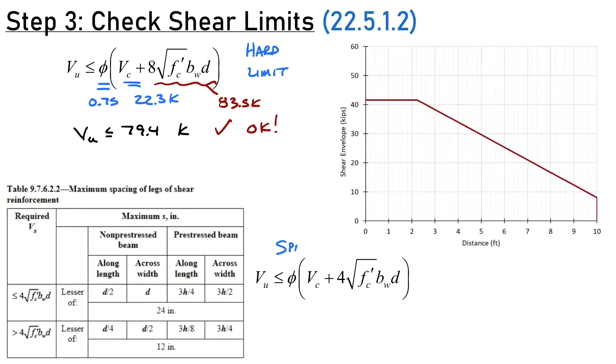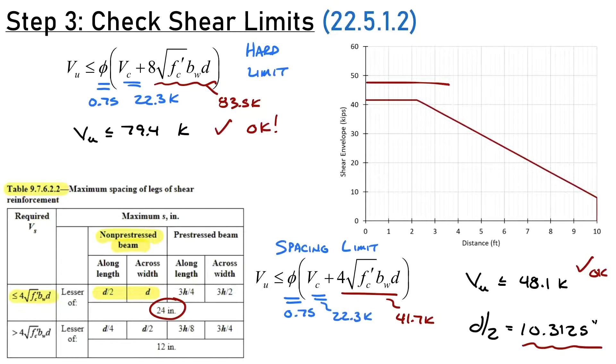The second limit is the spacing limit, which determines my maximum spacing of stirrups. Checking: is VU less than or equal to 48.1 kips? Yes, that limit is right about here and all my demands are less than that. That number gets used in table 9.7.6.2.2. Our required VS is less than 4 root F'C BWD. For a non-prestressed beam, my spacing limits are D over 2 along the length and D across the width, or 24 inches. D over 2 is 10.3125 inches, which controls.